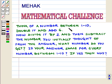Think of a number between 1 to 10. Double it and add 6. Now divide it by 2 and then subtract the number you initially thought of from the answer. What number do you get? Is your answer same for every number between 1 to 10? If yes, then why?